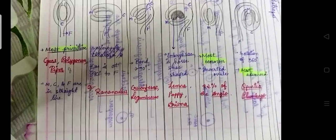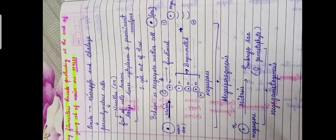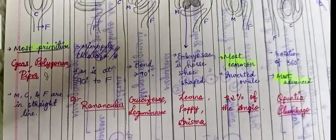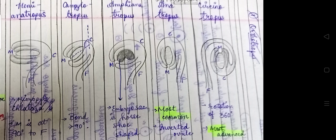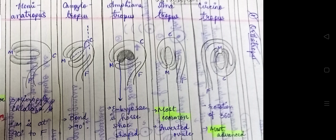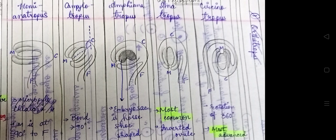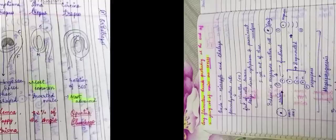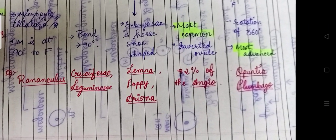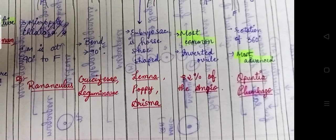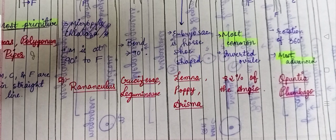The last type is circinotropous. It is the most advanced type of ovule, seen in Opuntia and Plumbago, where the ovule is completely rotated 360 degrees.